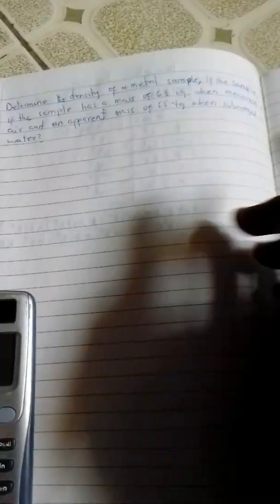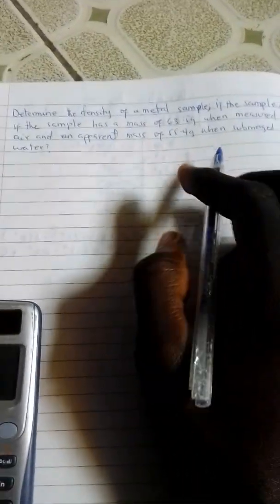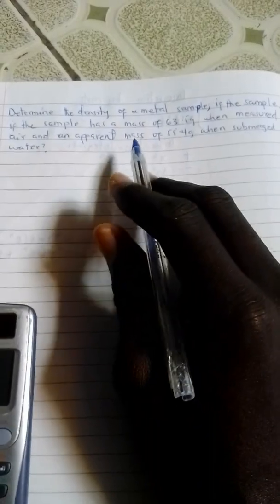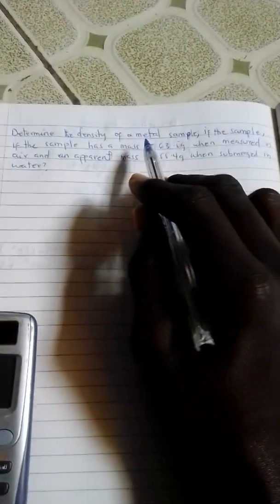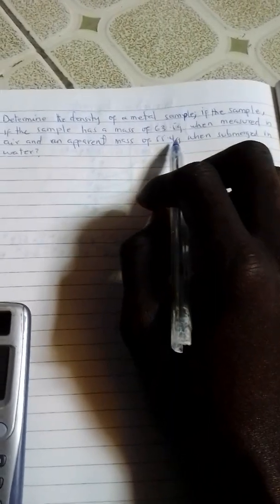Hello viewers, this is another section of our tutorial and you have a question in density. Determine the density of a metal sample if the sample has a mass of 53.5 grams when measured in air and an apparent mass of 55.4 grams when submerged in water.